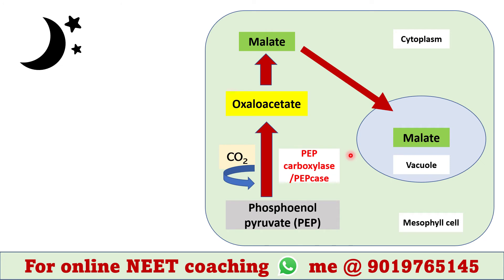In the mesophyll cell cytoplasm, a CO2 acceptor is present called phosphoenol pyruvate, or PEP. The enzyme PEP carboxylase is responsible for the fixation of CO2 with PEP, which produces oxaloacetate.